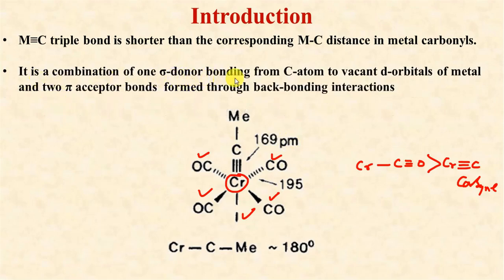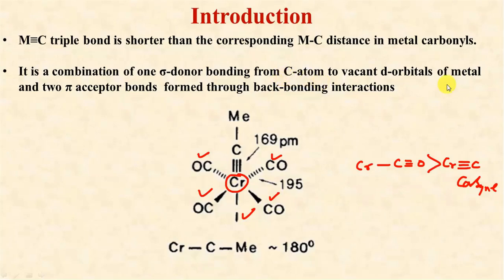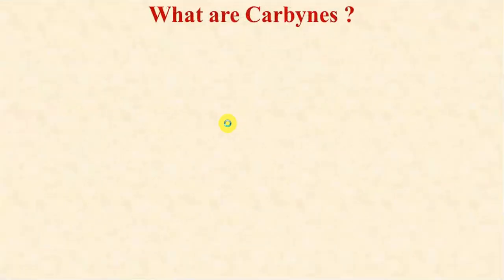The bonding is a combination of sigma donor bonding from the carbon atom to vacant d orbitals, somewhat similar to that of metal carbonyl complexes. In metal carbonyls, there is a sharing of electrons between the lone pair from the carbonyl carbon atom and vacant d orbitals of the metal. Similarly here, the sigma bond is formed by overlap of filled orbitals of the carbyne carbon with vacant d orbitals of metal, whereas the two pi receptor bonds are formed through back-bonding interactions.